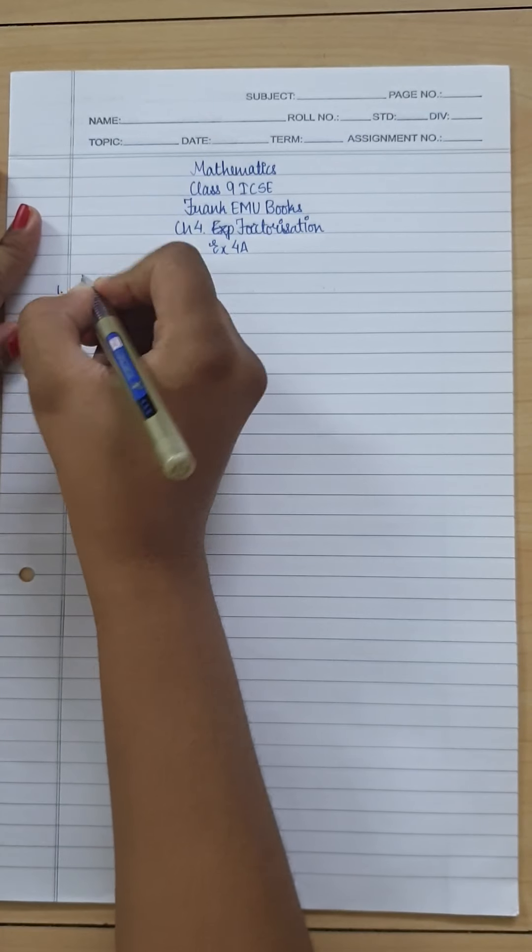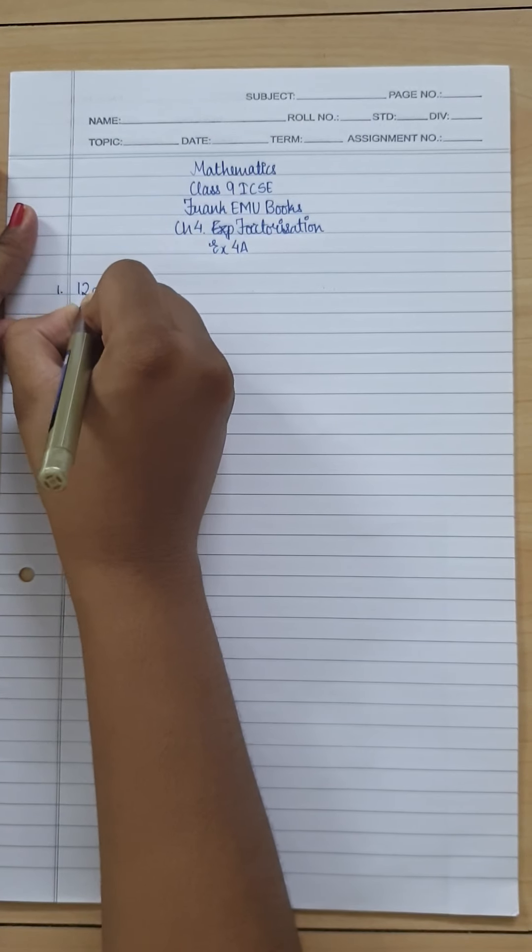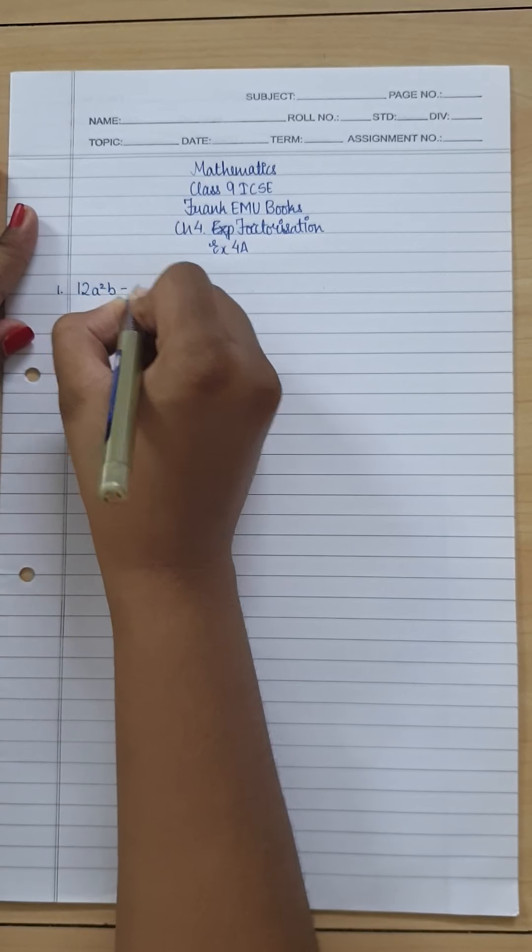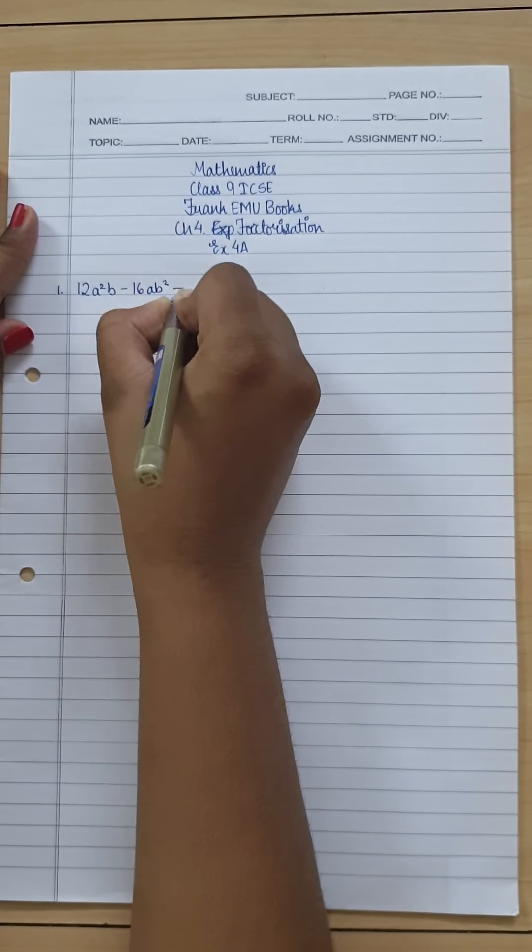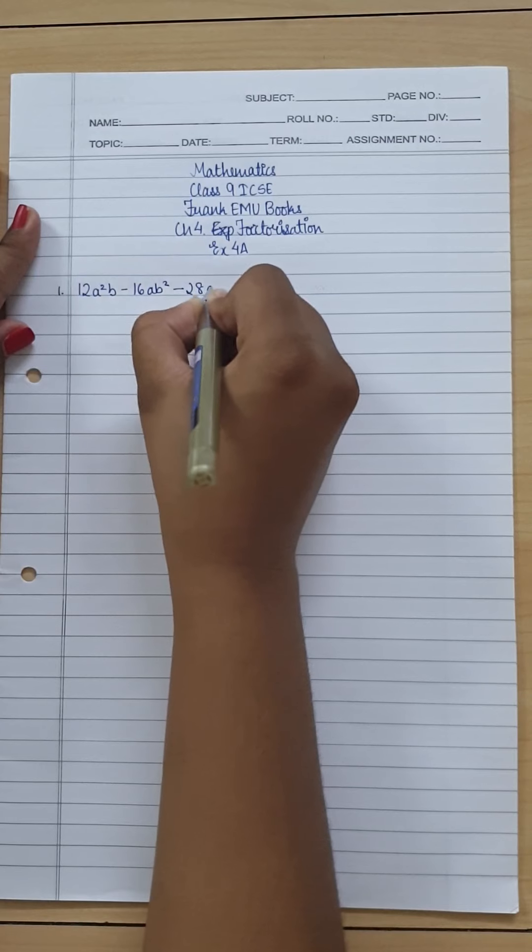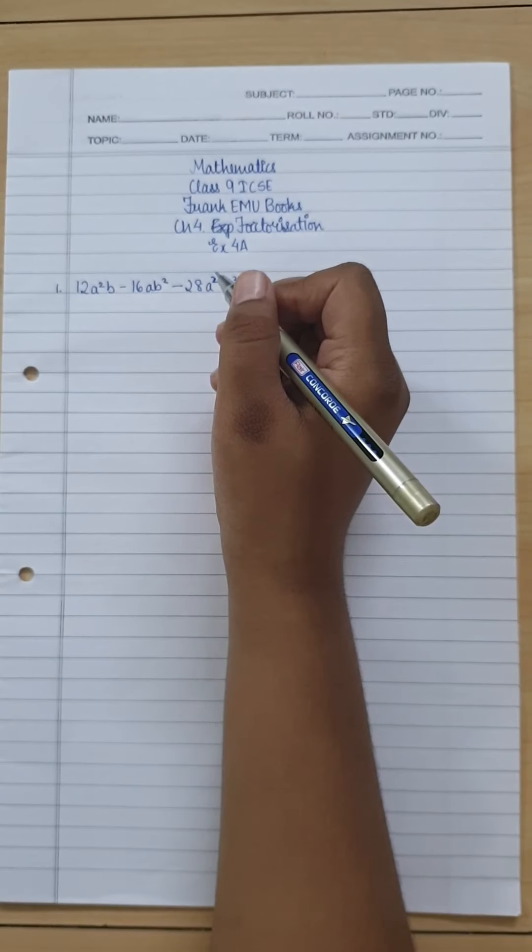The first question says 12a²b - 16ab² - 28a²b². So the common factor of all the numbers in this question is 4, because 12 is divisible by 4, so is 16, and so is 28.